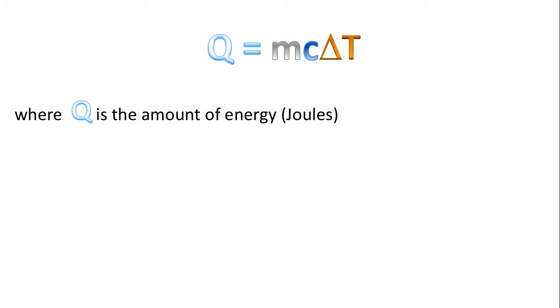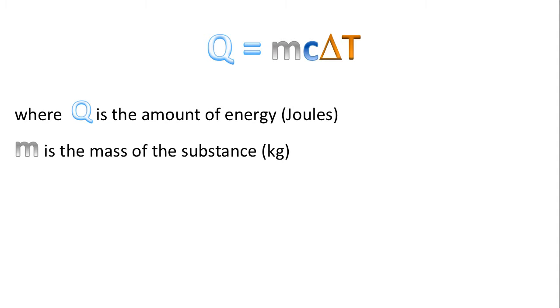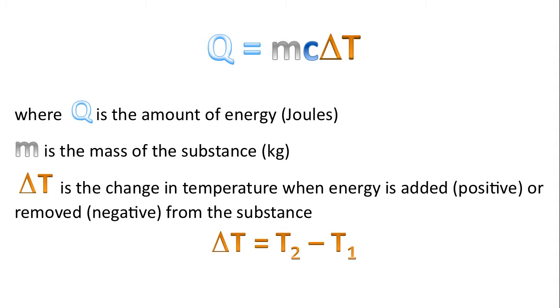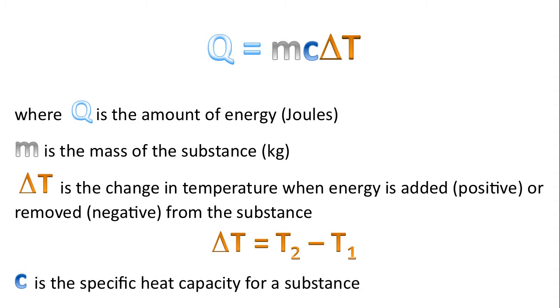Here is the formula that sums up specific heat capacity. Q is the amount of energy measured in joules, m is the mass of the substance in kilograms, and delta T is the change in temperature — positive when energy is added, negative when removed. The formula is T2 minus T1, where T2 represents final temperature and T1 the initial temperature. C is the symbol for specific heat capacity.